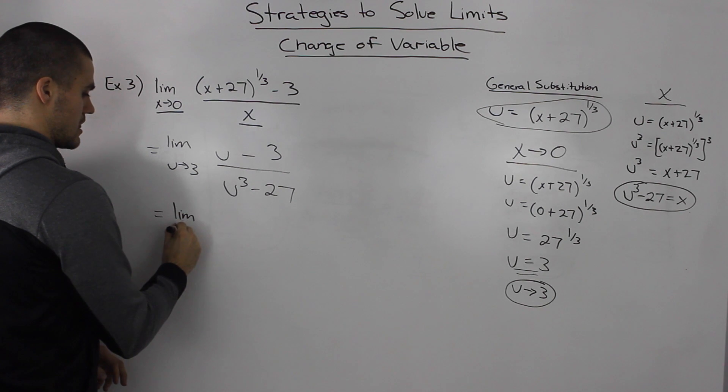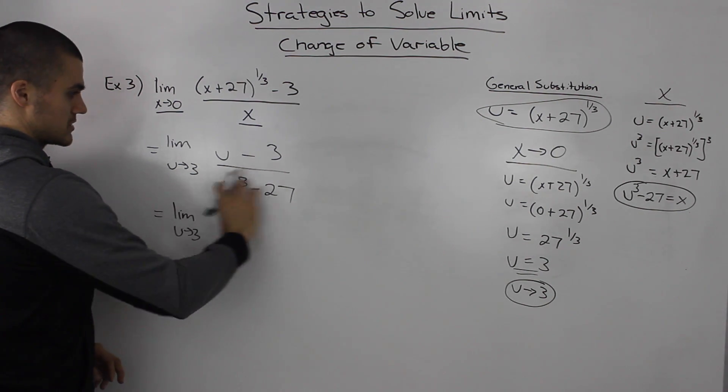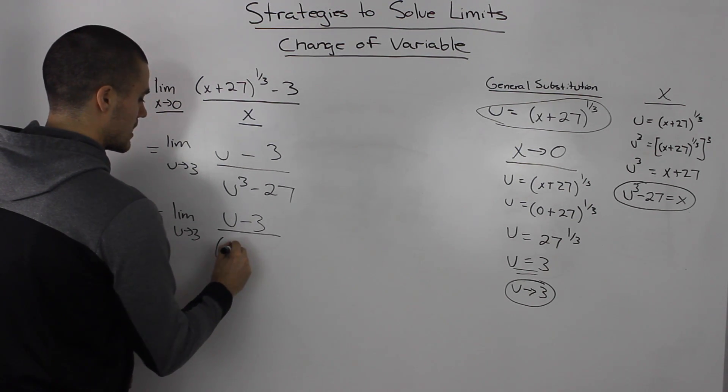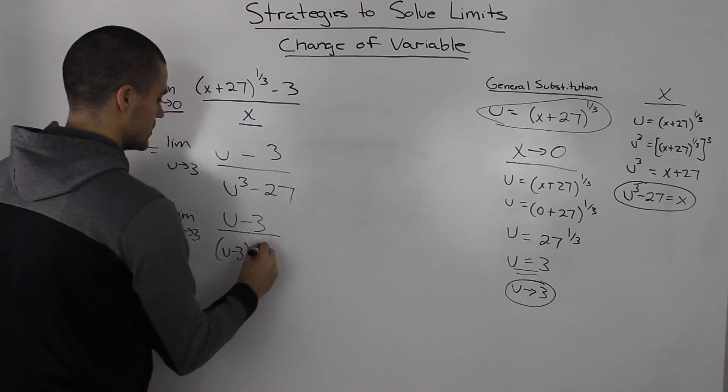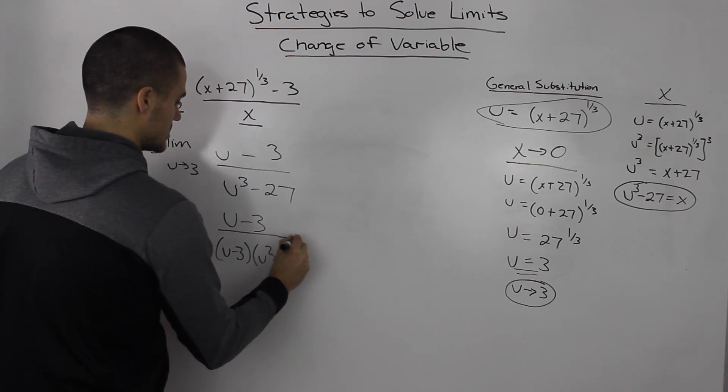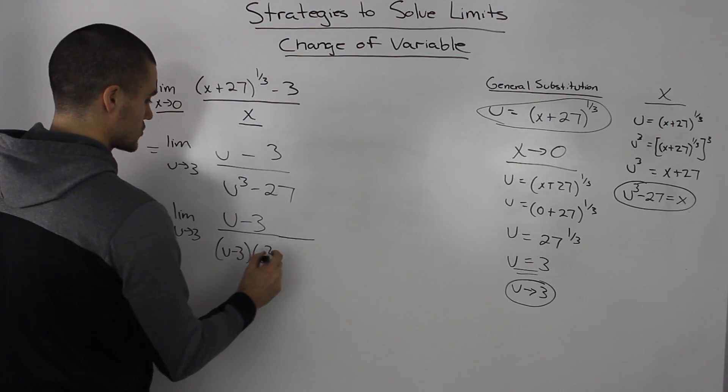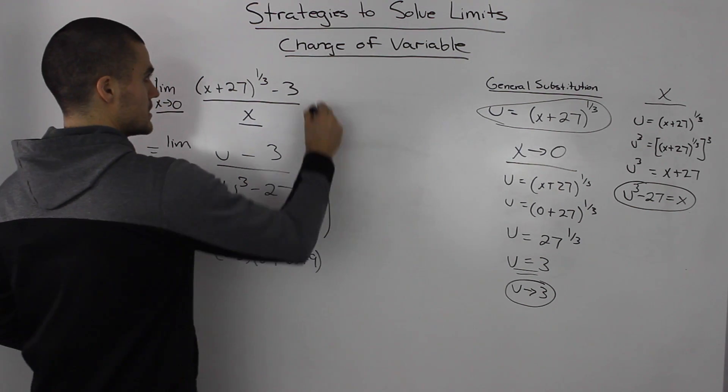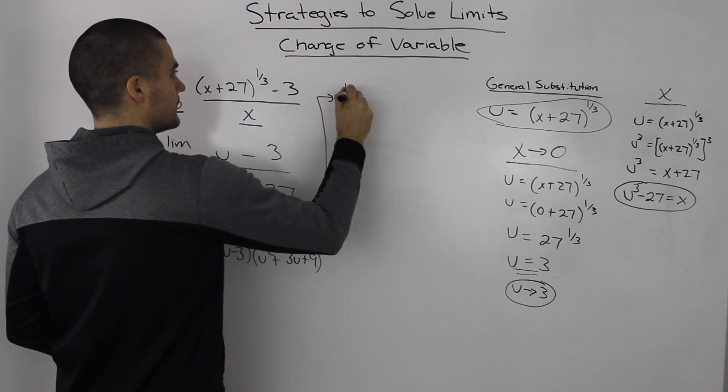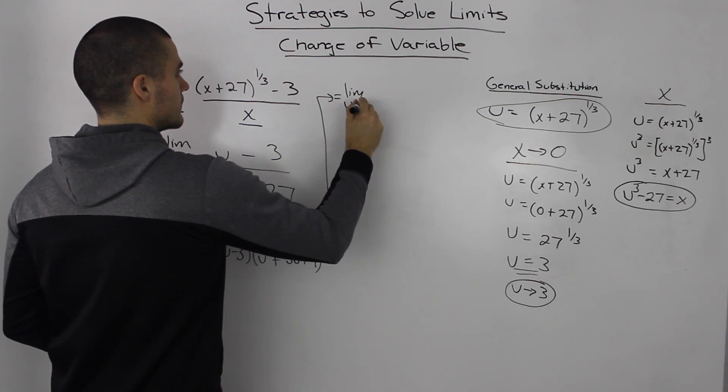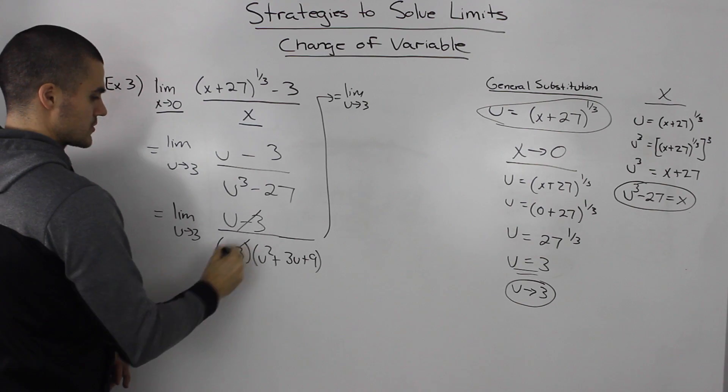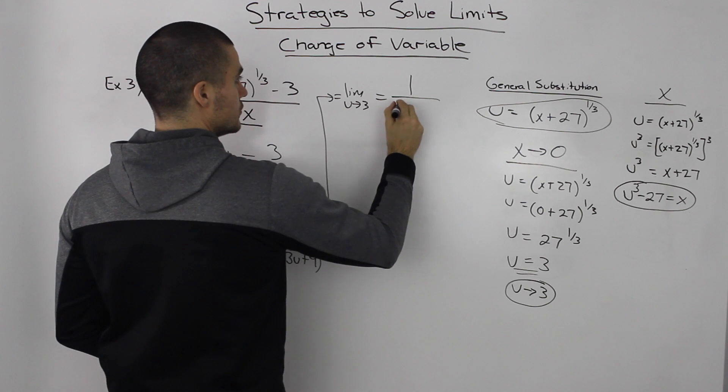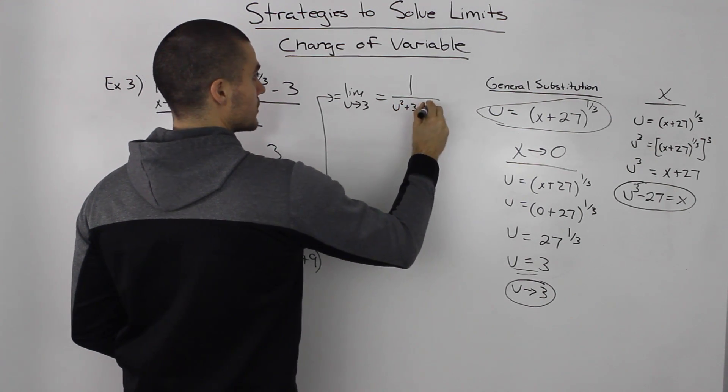Let's solve this like a normal limit. We factor the bottom, which is a difference of cubes. Using the difference of cubes formula, we get (u-3)(u^2+3u+9). The (u-3) terms cancel out, leaving 1/(u^2+3u+9).